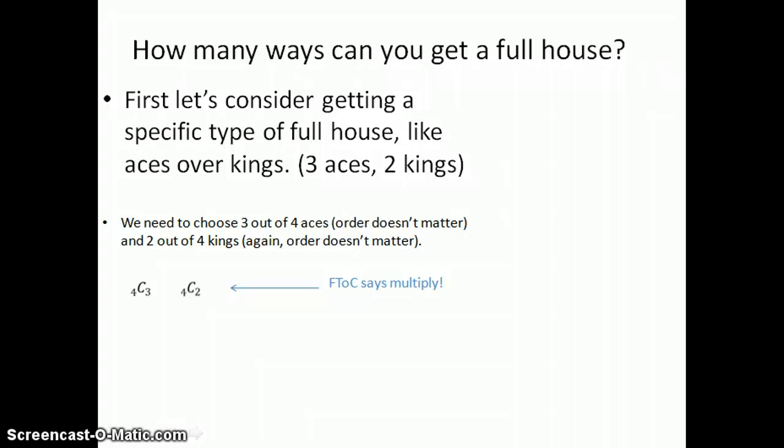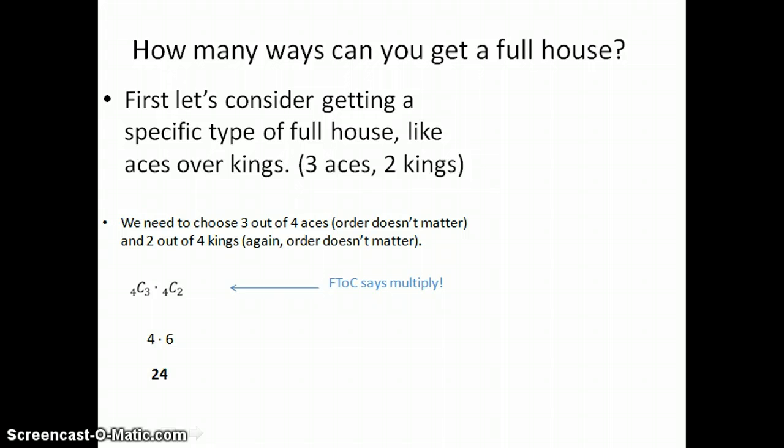Once we have these two numbers, the fundamental theorem of counting says multiply them together. For the aces, we get four, and for the kings, we get six. So once we know we want aces and kings, there are 24 ways to select three aces and two kings.